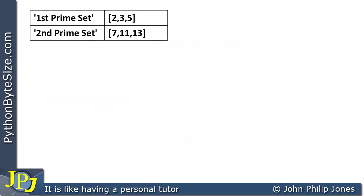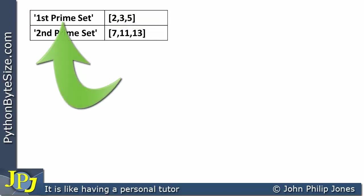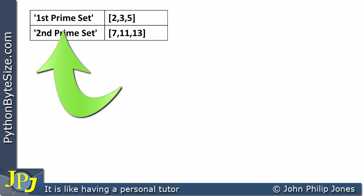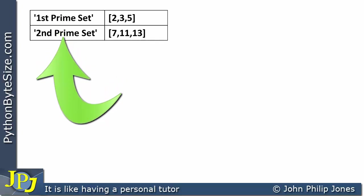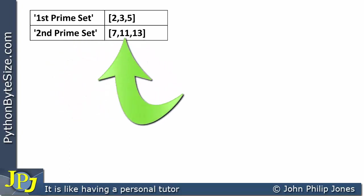Now consider this more contrived example. We have a string key 'first prime set' mapping to a list containing 2, 3, and 5 — the first three prime numbers. The list is in the value position, which is fine because values can be any type. Similarly, 'second prime set' maps to a list containing 7, 11, and 13. A list object is fine here because a value can be a list.